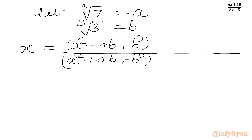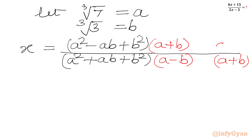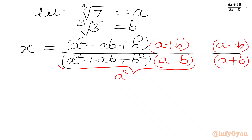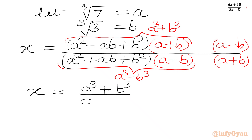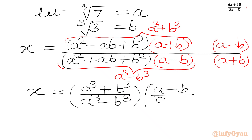Now we will multiply the numerator by (a + b), so I need to divide by (a + b) also. The denominator we can multiply by (a - b), so I need to write (a - b) also. You can see this is the formula for a cubed minus b cubed, and here this is the formula for a cubed plus b cubed. So let me write x equal to (a³ + b³) over (a³ - b³) times (a - b) over (a + b).